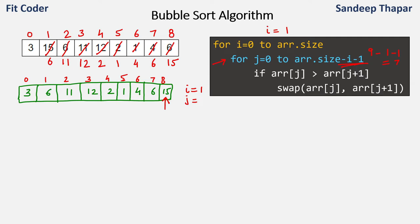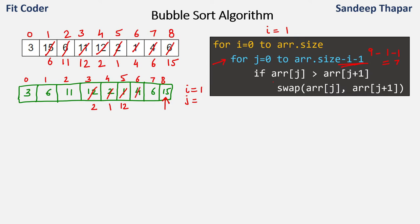So now in the second iteration we compare array[j] with array[j+1]. We compare 3 and 6 — these are in the right order, so nothing needs to be swapped. Then we compare 6 and 11 — also in the right order. Then 11 and 12 — in the right order. Then 12 and 2 — these will be swapped, so 2 will come here and 12 will come here. Then we compare 12 and 1 — these will again be swapped because 1 is smaller. Then we compare 12 and 4 — these are not in the right order, so these will be swapped.